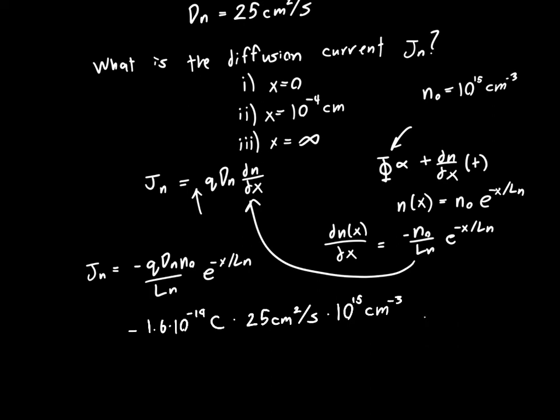And we've got an exponential e to the minus x over Ln. I'm going to leave x for now. We're just going to evaluate this constant out front and get the units. And Ln is 10 to the minus 4 centimeters.